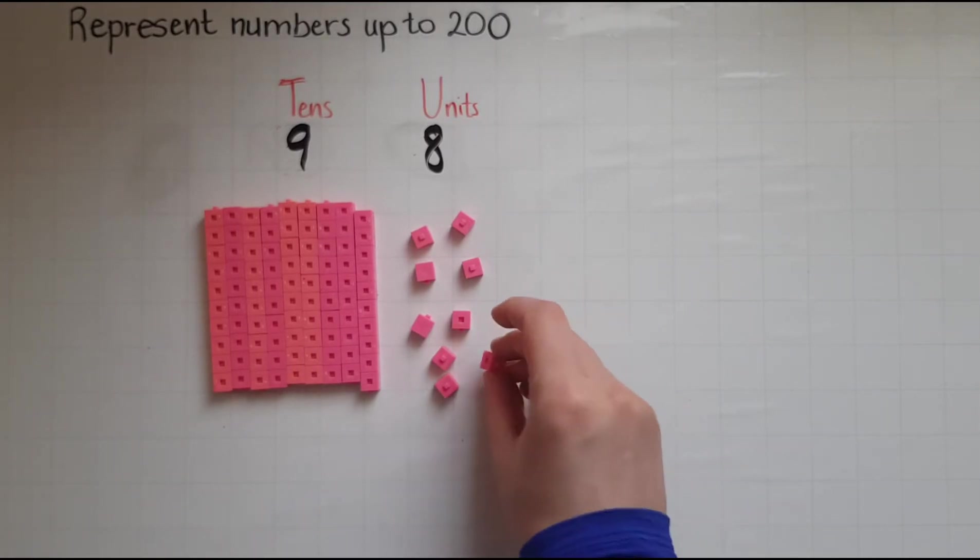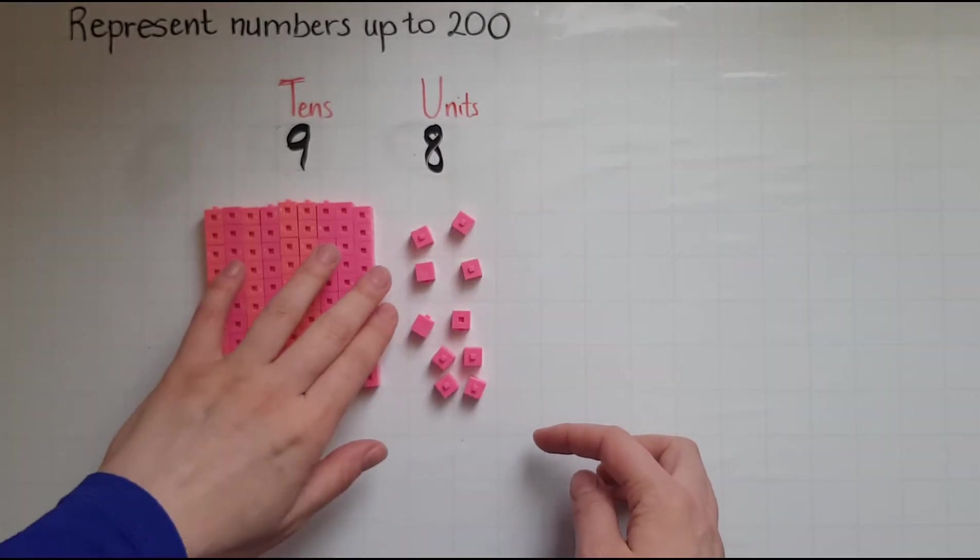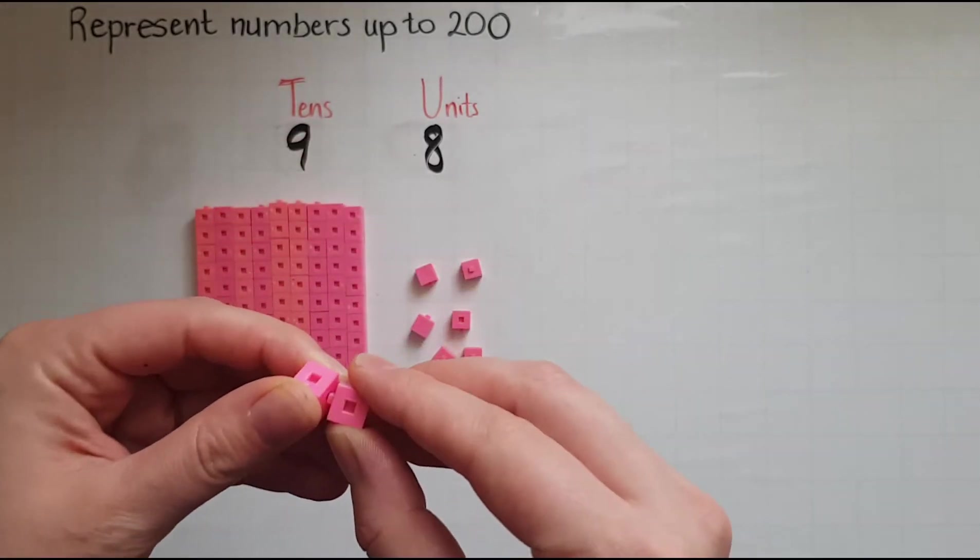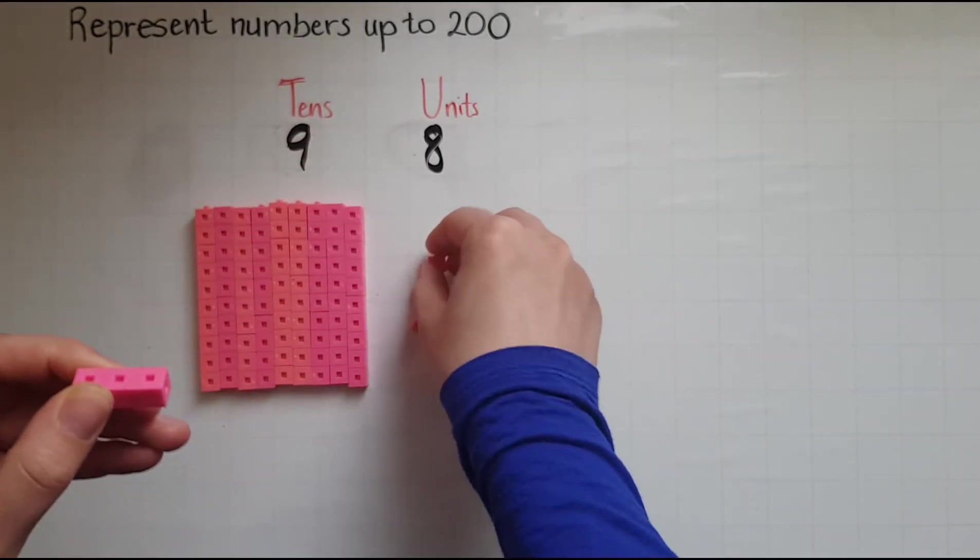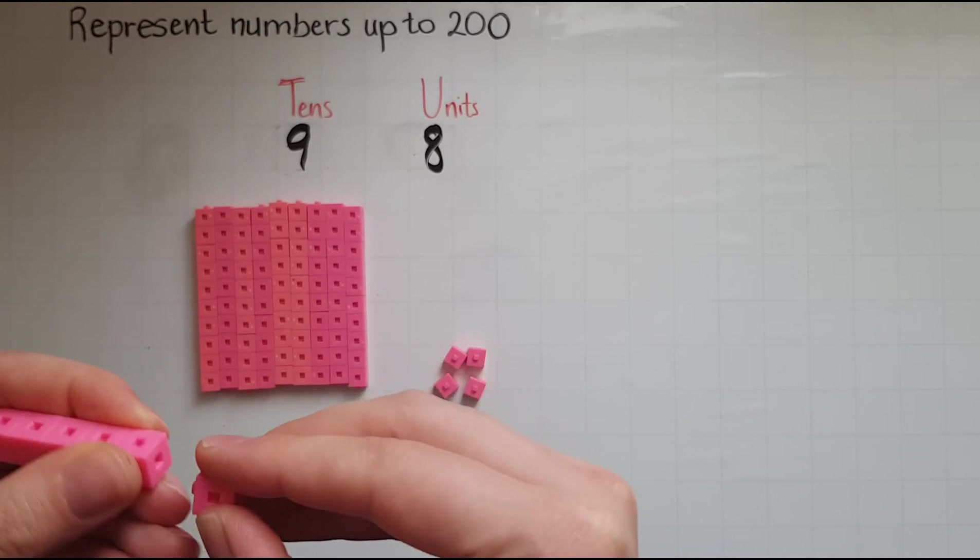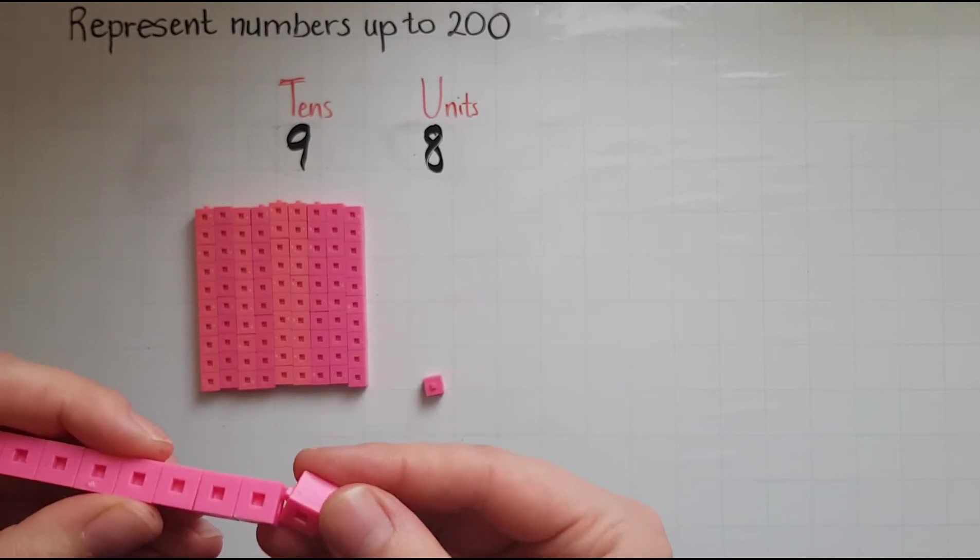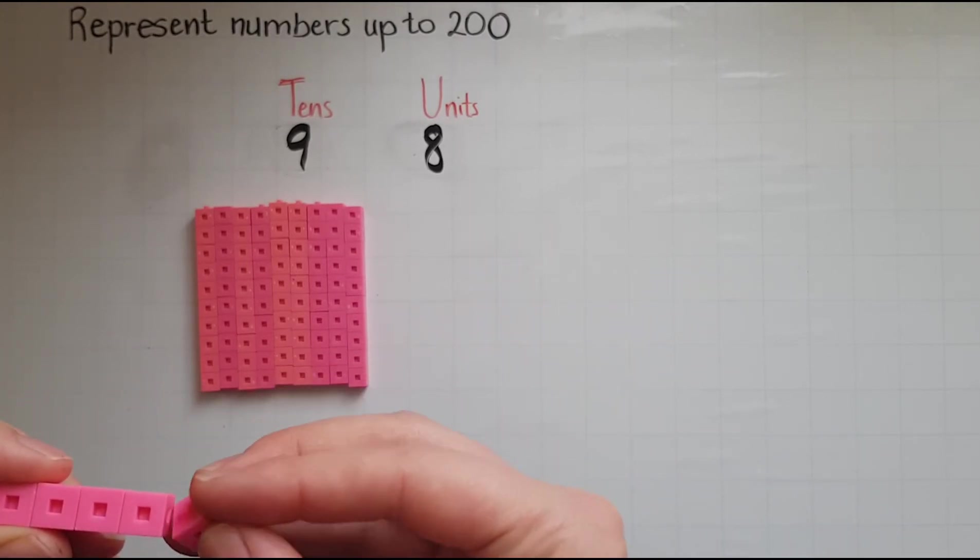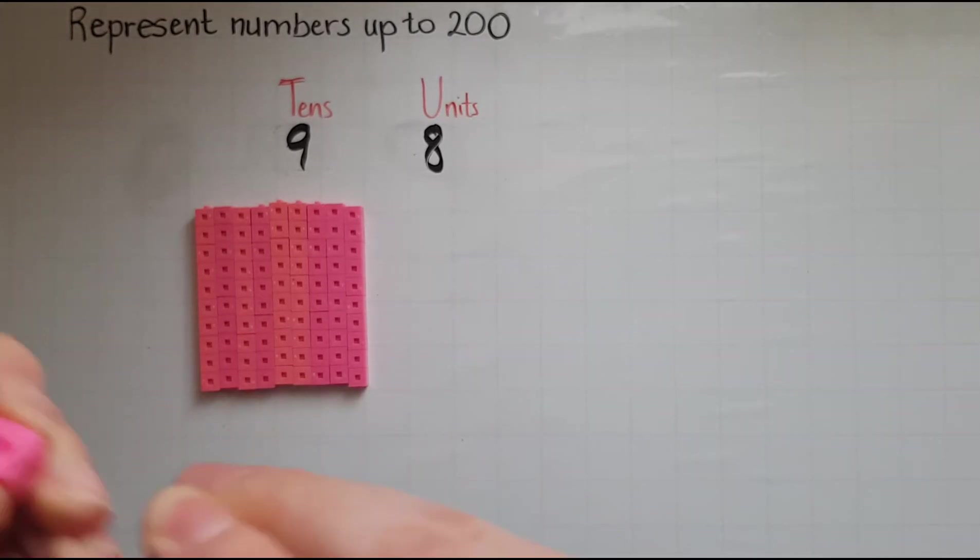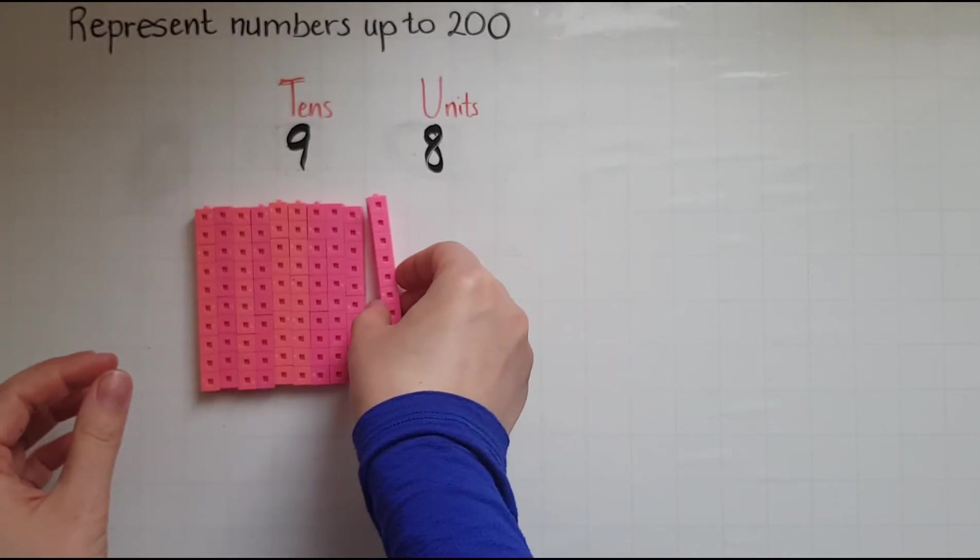If I add two single cubes what would happen? Now I've got one, two, three, four, five, six, seven, eight, nine, 10. And we've said that if we've got 10 we could actually put these together to make a block of 10. So I will add these together. I'll put them together.